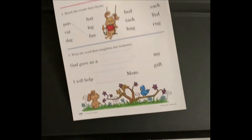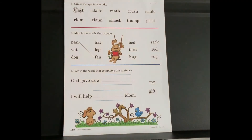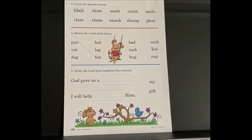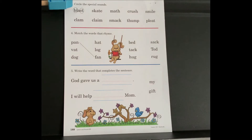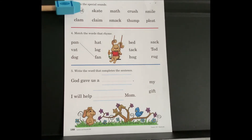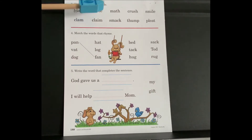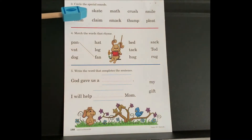When you have completed the front, you are turning to the back of the paper. We are now on page 188. Number three, circle the special sounds. Let's look at the example — two special sounds make up this word: BL in block and ST in stop. You are only marking the special sounds. Go through each word and mark the special sounds.